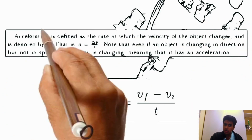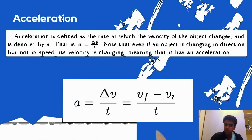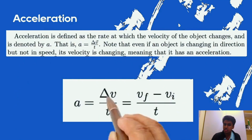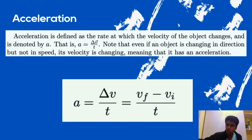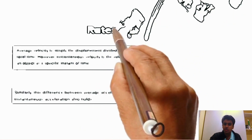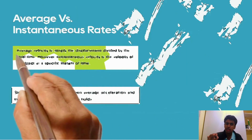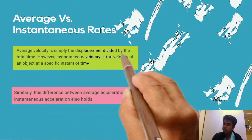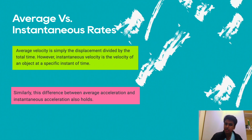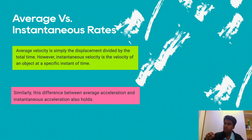Acceleration is the rate at which the velocity of an object changes, and it's denoted by a. The average acceleration is simply the change in velocity over time. Average velocity is simply displacement divided by time, while instantaneous velocity is velocity at a very specific instant of time. This same relation applies to average acceleration versus instantaneous acceleration: average acceleration is delta v over t, while instantaneous acceleration is the acceleration at a very specific point in time.